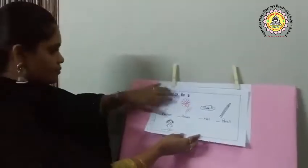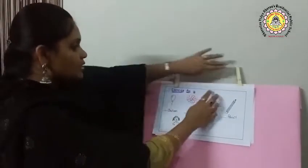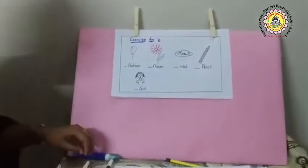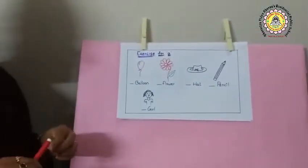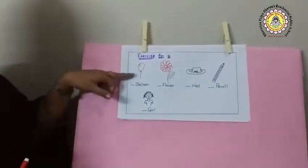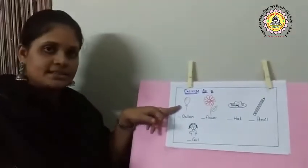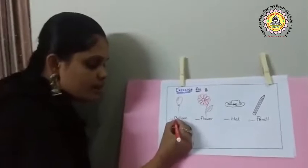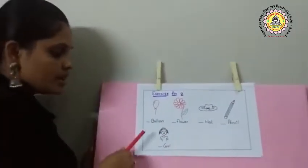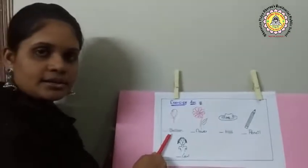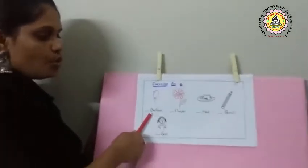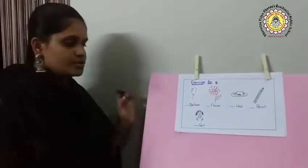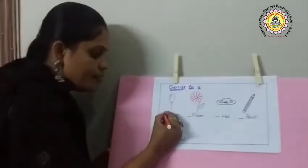Exercise for A. Look at the pictures, children. Down below each picture I have given the name of that word. Tell me which article we will use. First picture — what is it? It is a balloon. What is the starting letter of this word? It is B. B is a consonant, so as per the rule, before consonants which article do we get? A. So we will say: a balloon.